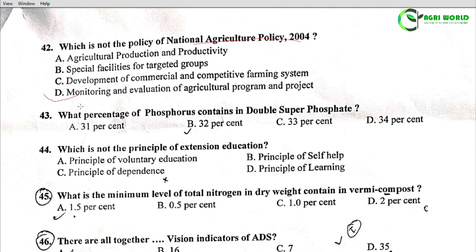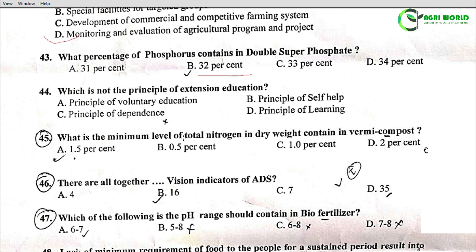Question 43: What percentage of phosphorus is contained in double superphosphate? Options: 31, 32, 33, 34. The correct answer is 34 percent phosphorus. Question 44: Which is not the principle of extension education? Options: principle of voluntary education, principle of self-help, principle of dependence, principle of learning. Option C — principle of dependence — is not a principle of extension education.